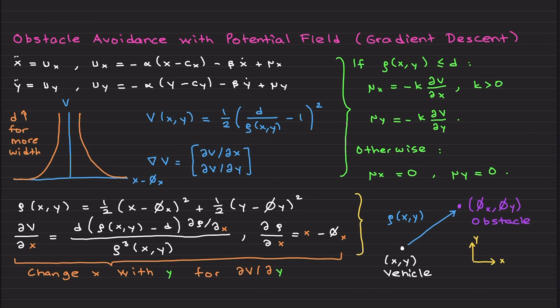I am going to choose it as a metric that captures how close you are to the distance to the obstacle. Let's say the obstacle is located at φx and φy, and your vehicle is located in x and y position.